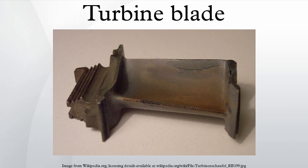GE used Inconel 738 as a first-stage blade material from 1971 until 1984, when it was replaced by GTD-111. It is now used as a second-stage material, and was specifically designed for land-based turbines rather than aircraft gas turbines.